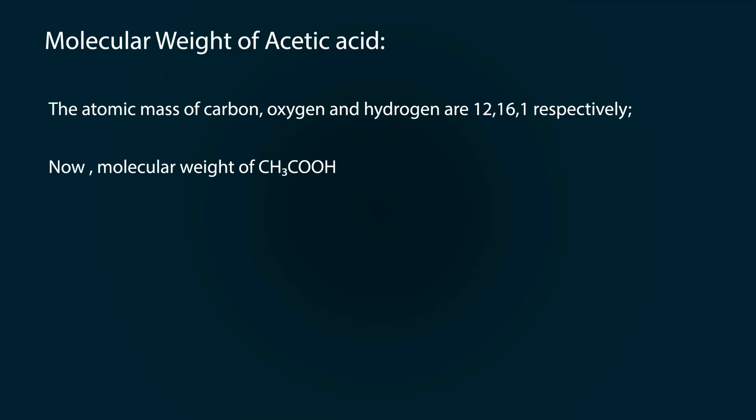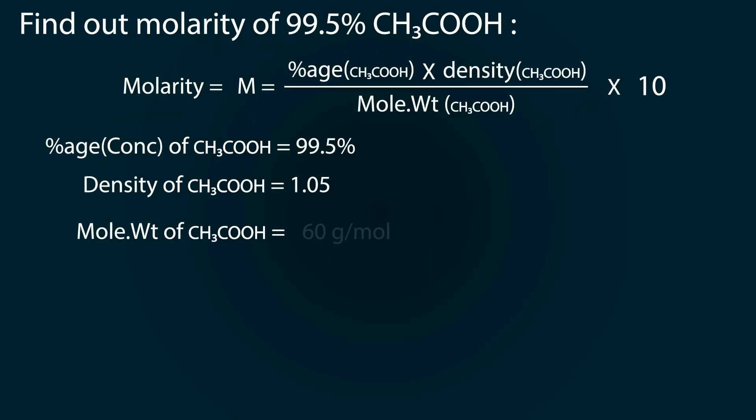Now let's find out molecular weight of CH₃COOH as 12 + (3 × 1) + 12 + (16 × 2) + 1 and we get our value as 60 grams per mole. So molecular weight of acetic acid is 60 grams per mole.